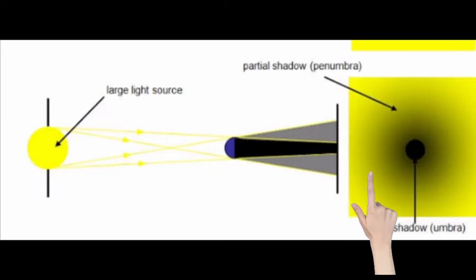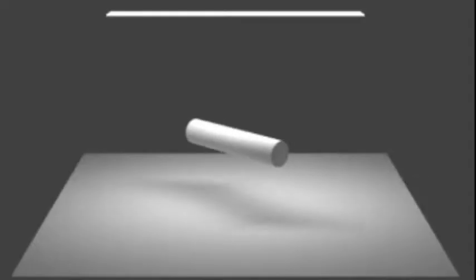Hence, the shadow obtained from an extended source is faint. The boundary of the shadow is not well-defined.